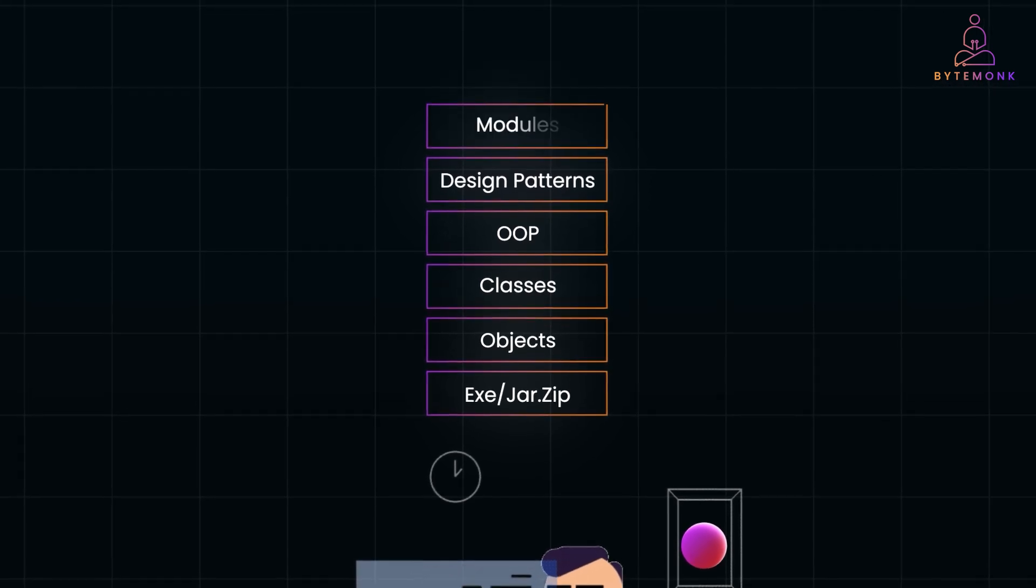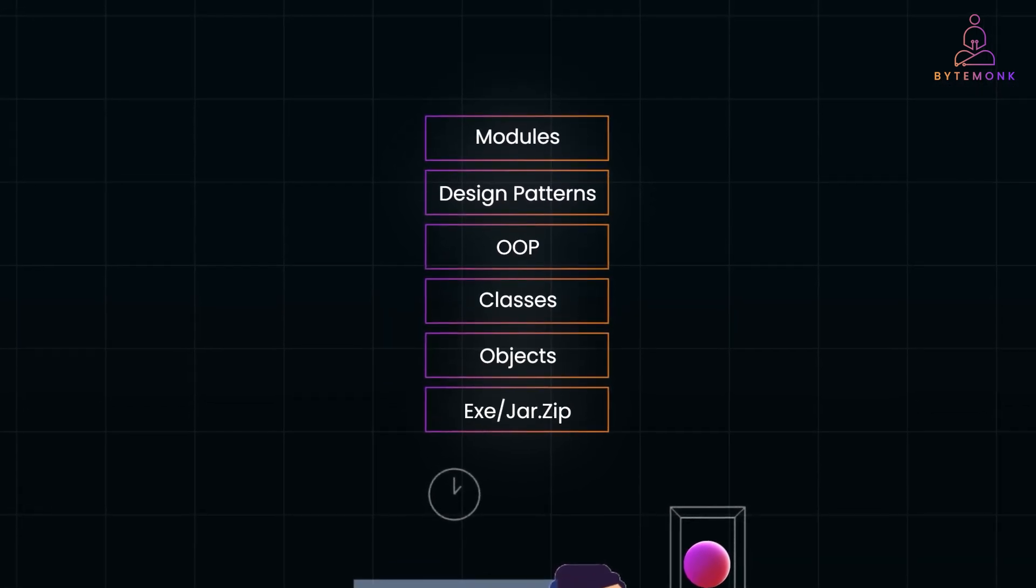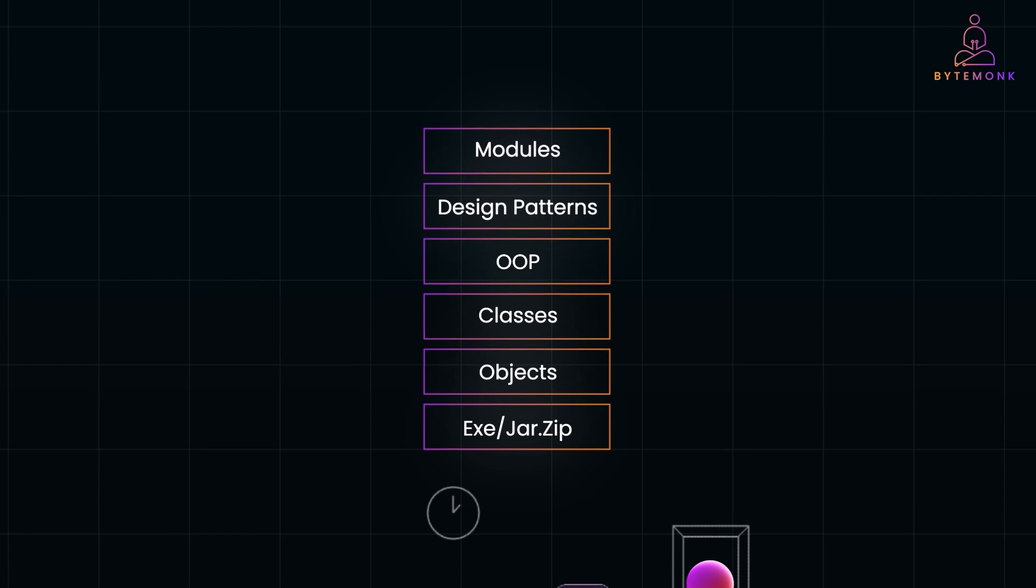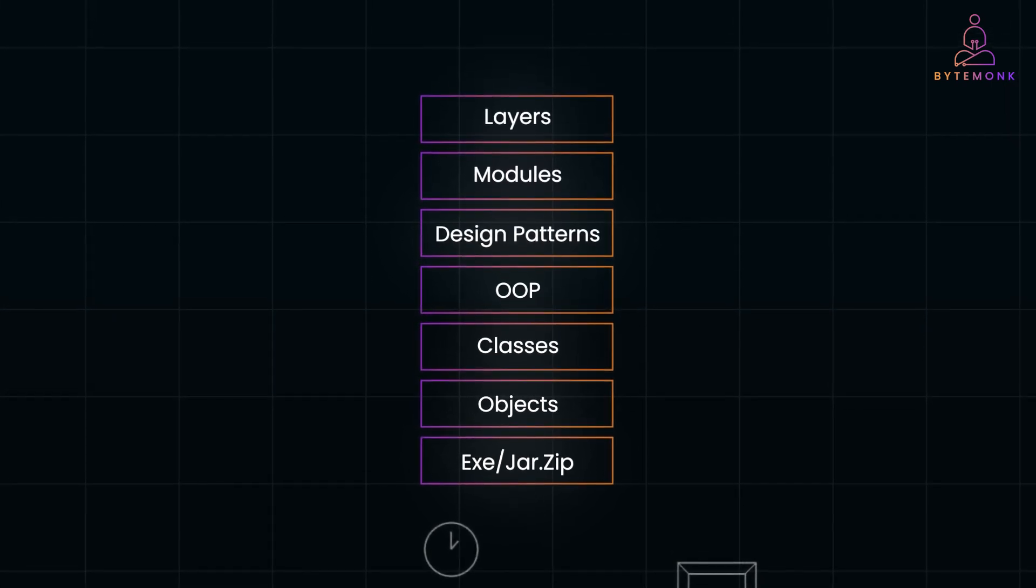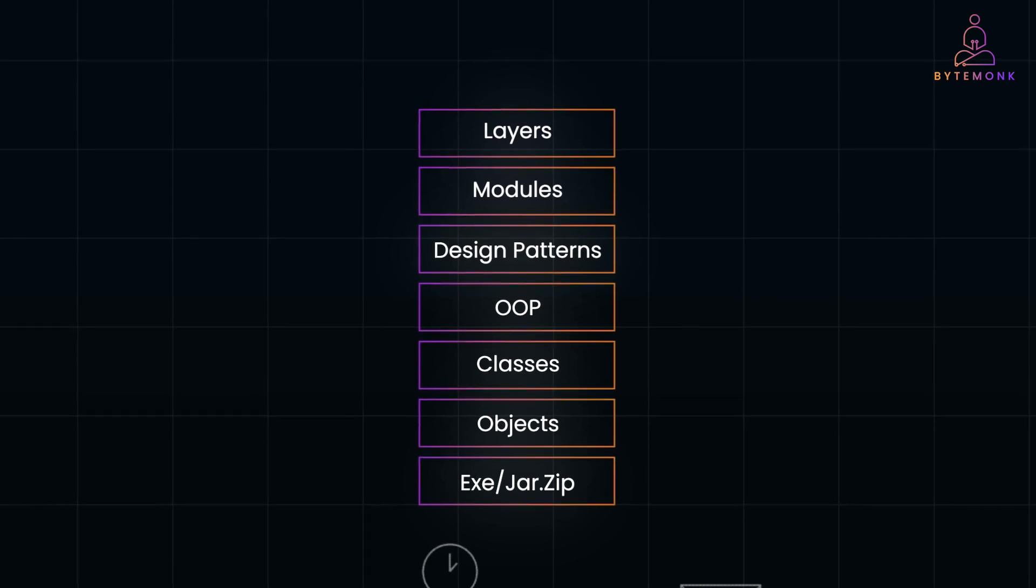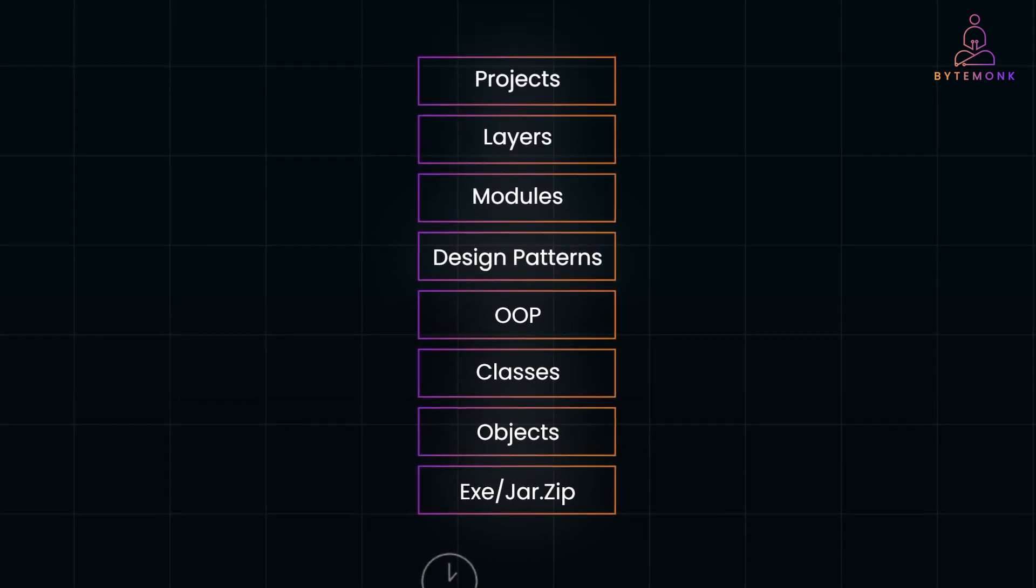The next step is breaking your code into modules. And with each module, you follow a specific design pattern. Beyond that, you have architectural layers like MVC layers, services, controllers, or DAO layers, which all come together to form a typical project architecture.